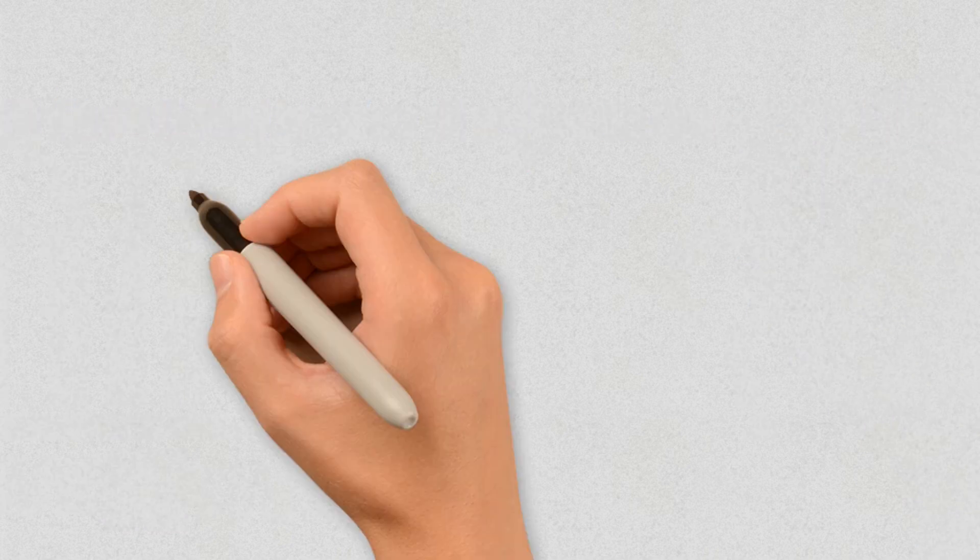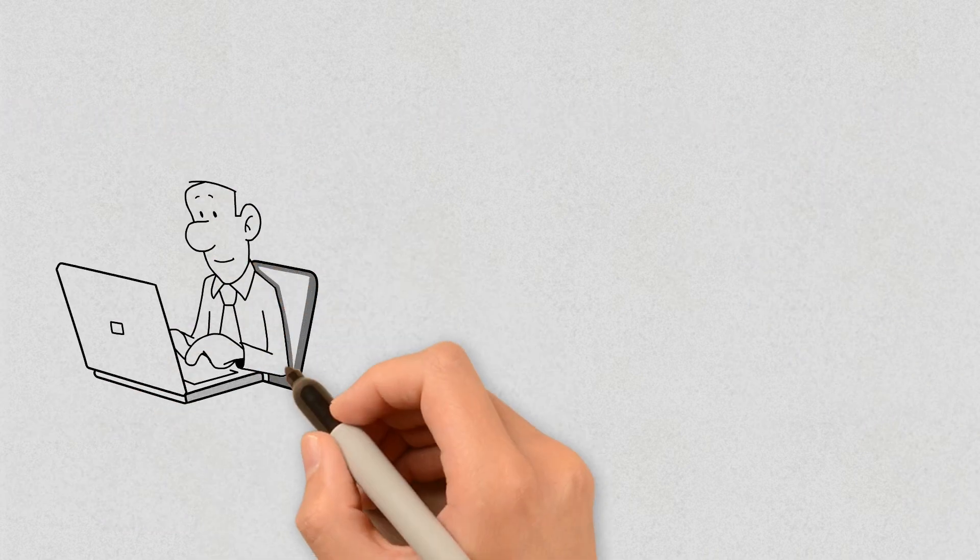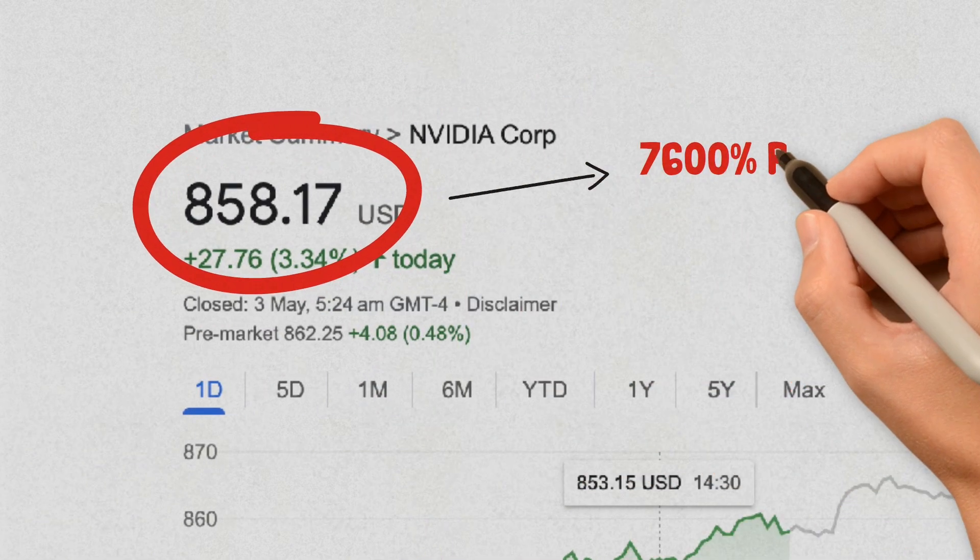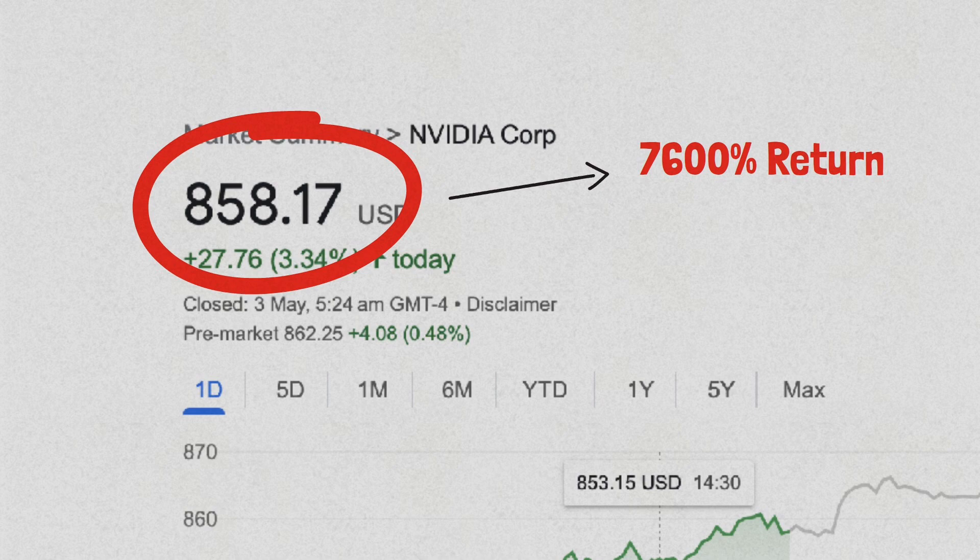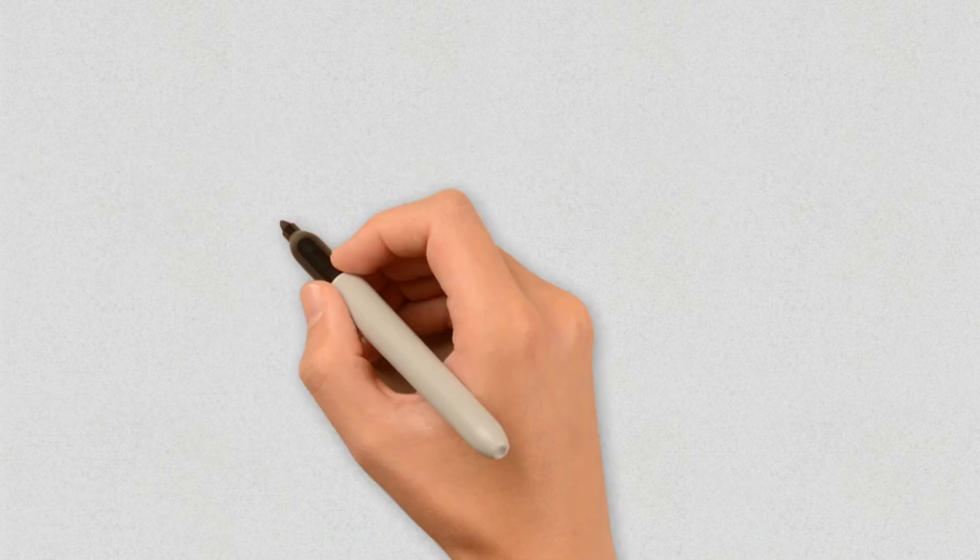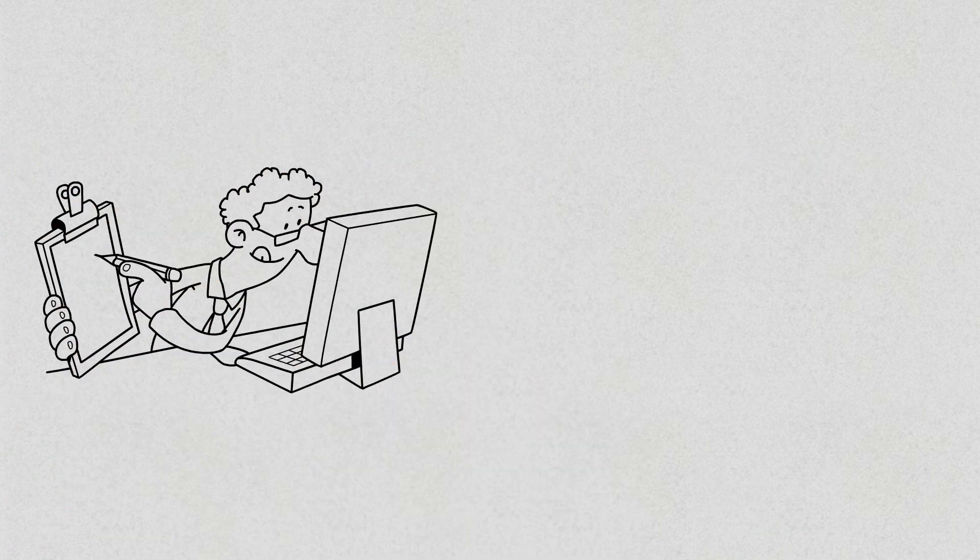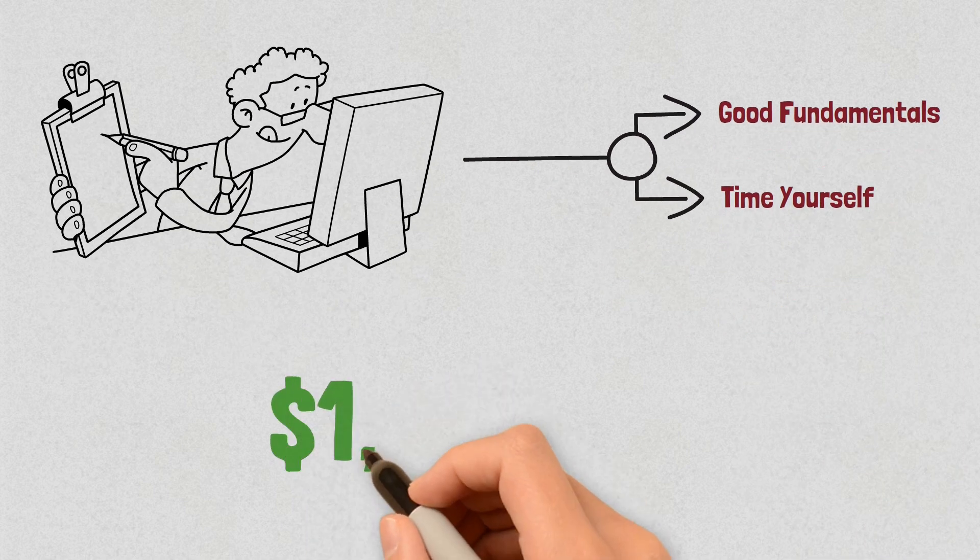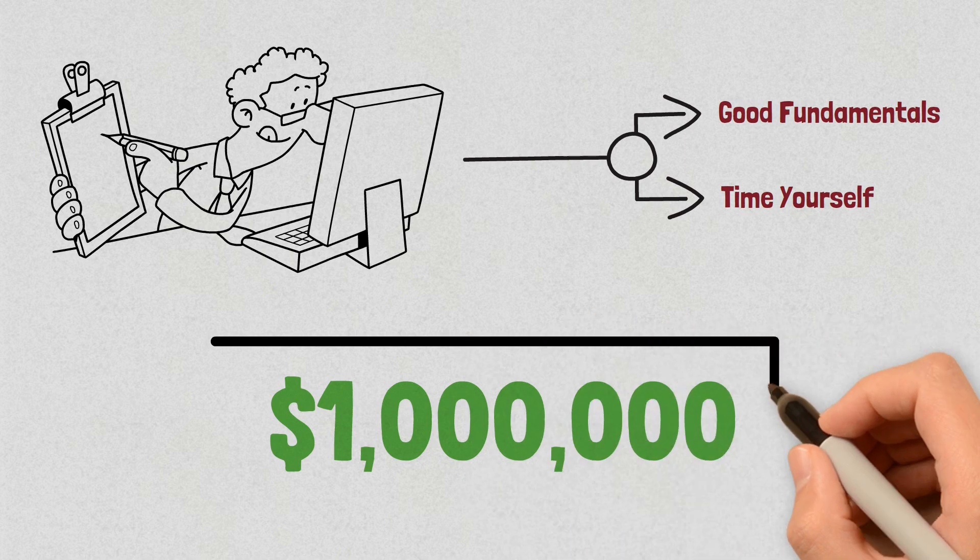Guess what? At the time I'm writing this script, the Nvidia stock trades above $850. That is above 7,600% return on investment. Pretty good, right? If you train yourself on identifying companies with good fundamentals and learn to time yourself right, you can make your first $1 million very realistically.